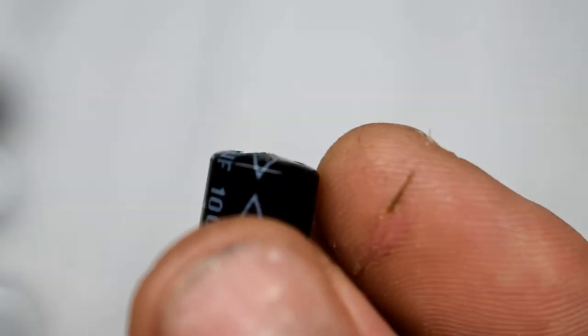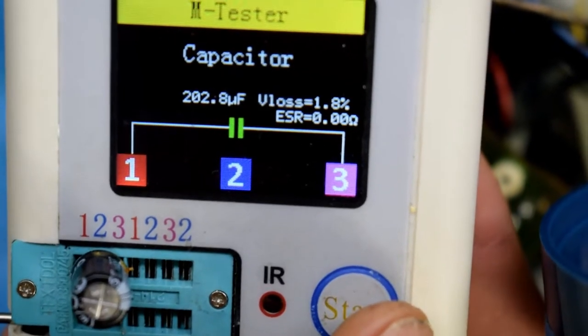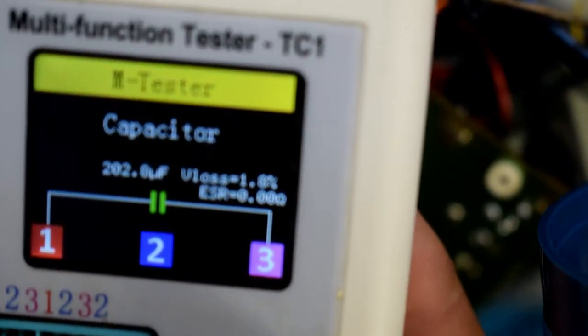So I took that out and it was a 100 microfarad, 16 volt capacitor. You can see the bulge there. And I have a capacitor tester and it wasn't measuring the correct microfarad.